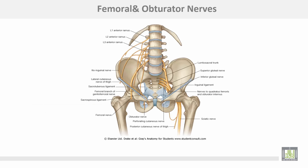This is the lumbar plexus with the psoas major muscle removed, shown inside the abdomen. It gives two main branches: the femoral nerve, which is lateral to the psoas major, and the obturator nerve, which is medial to the psoas major.